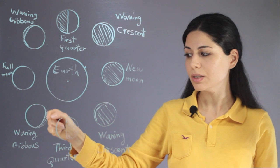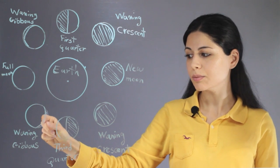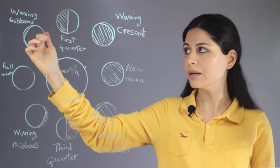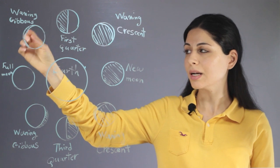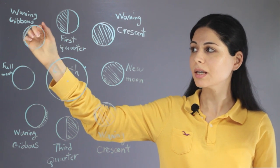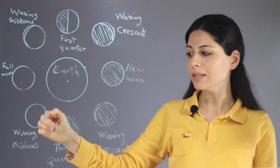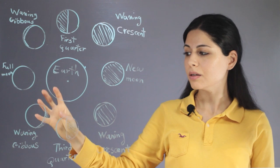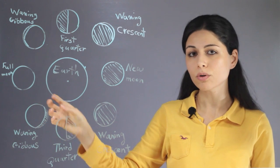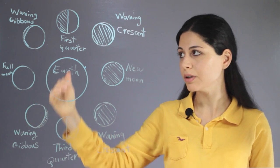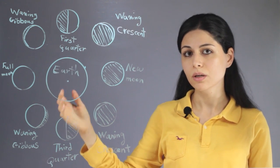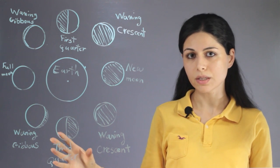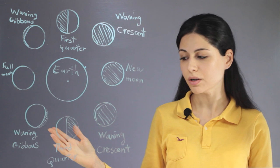After that we have the waning gibbous phase. In the waning gibbous phase, most of the moon is bright but a narrow part is dark, so we cannot see that part. Comparable to the waxing gibbous, the portion of darkness and brightness are equal, but different parts of the moon are dark and bright in each case.